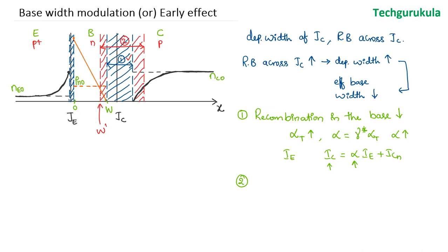Coming to the second effect: the effective base width has reduced due to the depletion region in the collector junction increasing, which means the electric field would also increase and extend into this region. The carrier concentration in the base should become zero at W prime, not at W. This means the new carrier concentration profile in the base would look different. Let me call this the second case concentration gradient, and the original as the first case. The concentration gradient in the second case is higher.